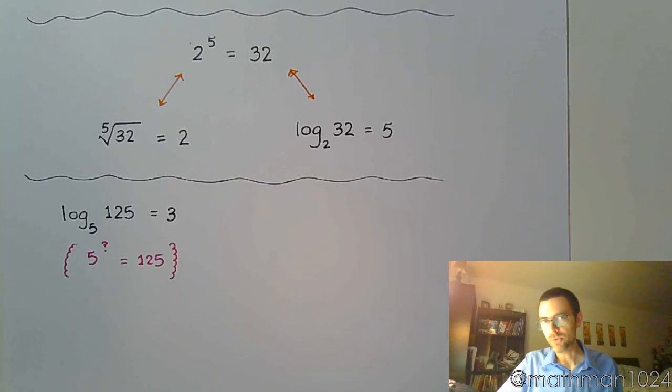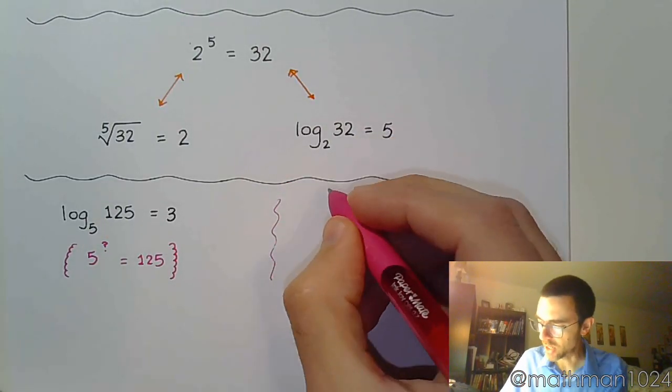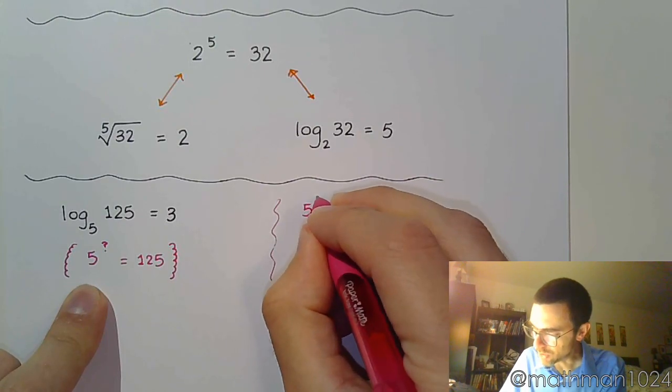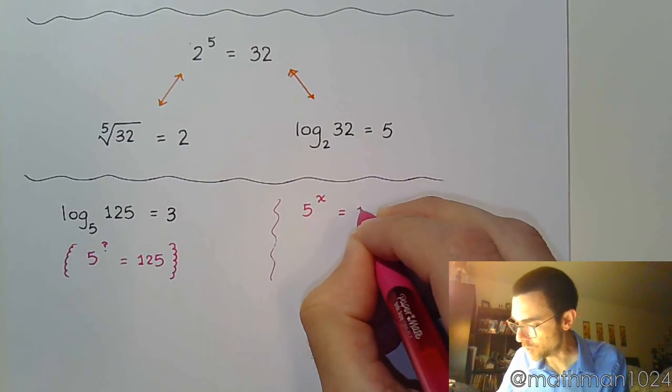So a lot of times what we do for these expressions is that instead of writing the question mark, we might come over here to the side and actually write the equation and say, okay, 5 to some power, we don't know, so let's call that x, is equal to 125.